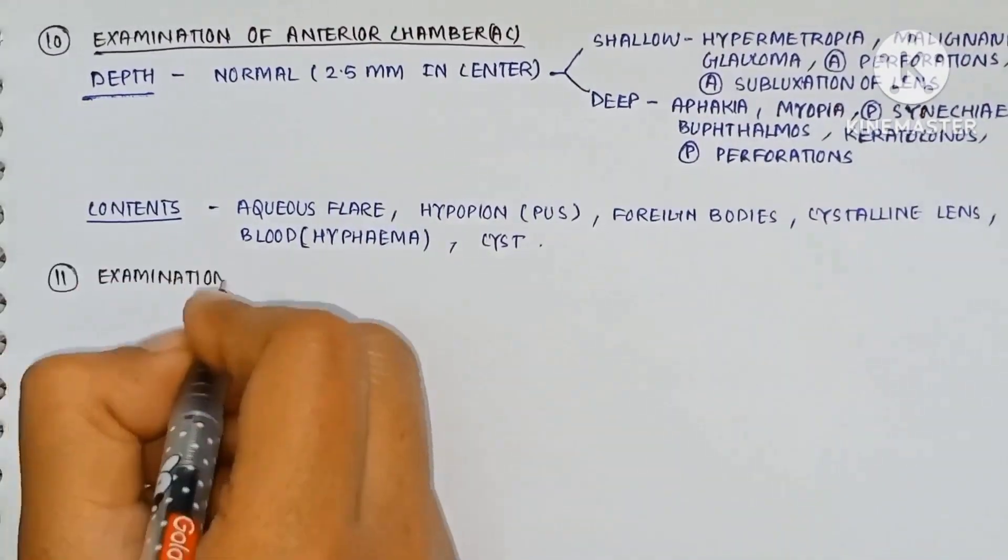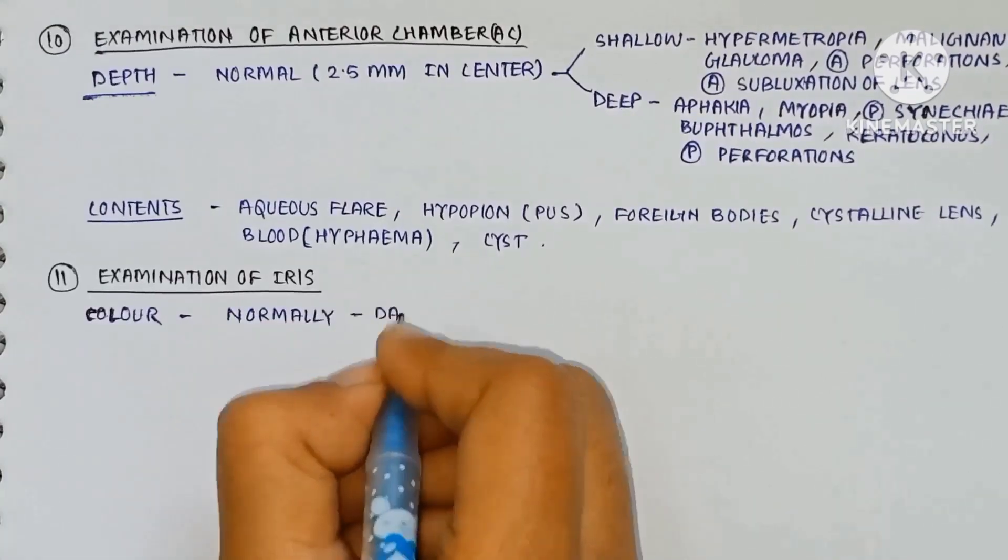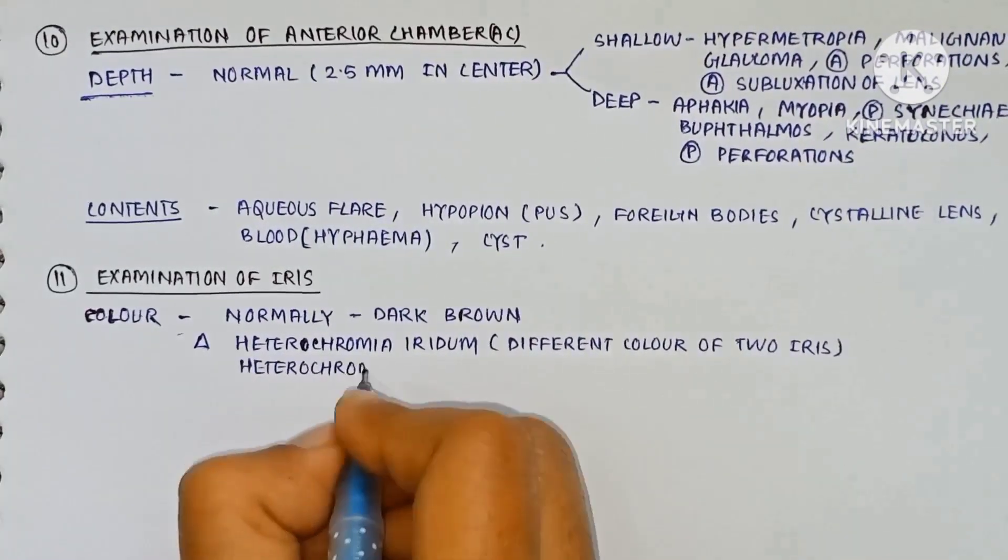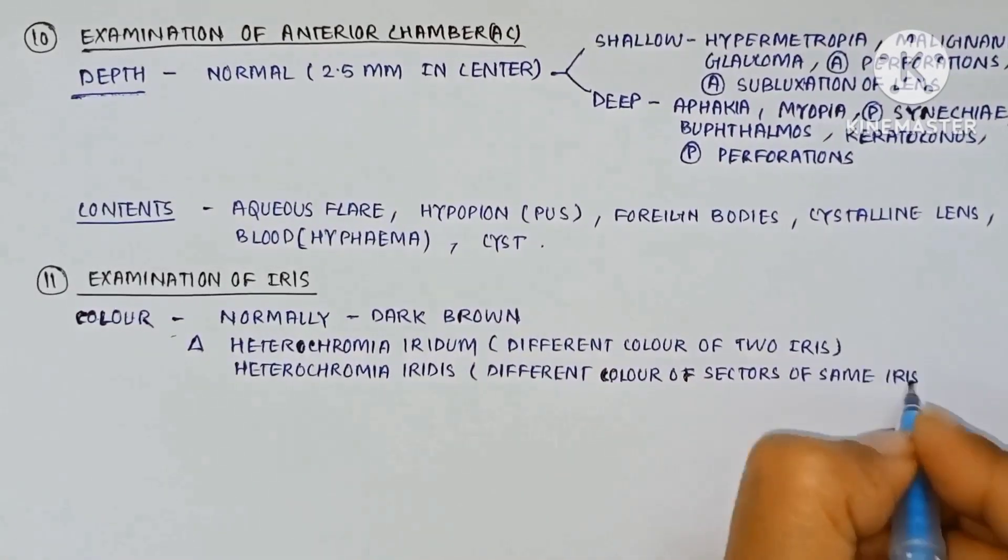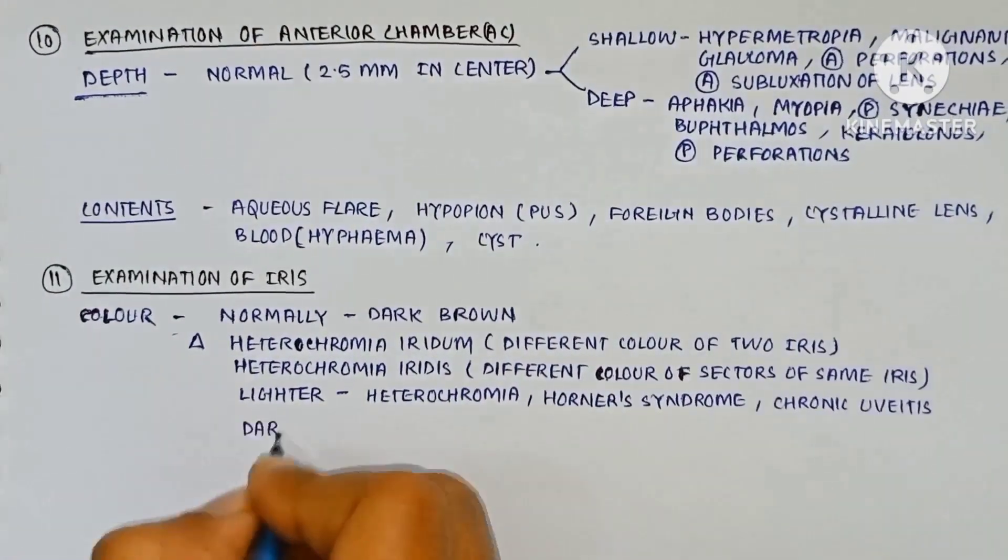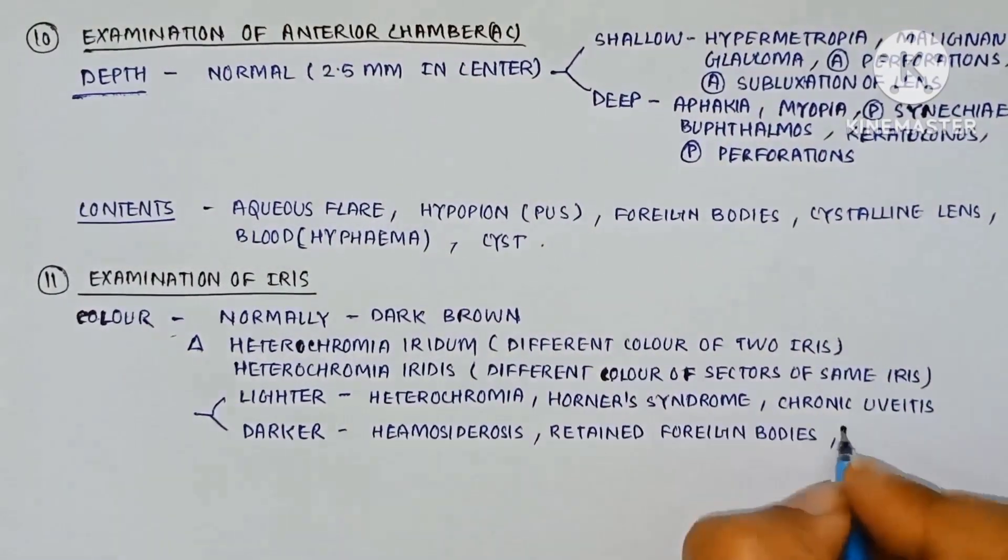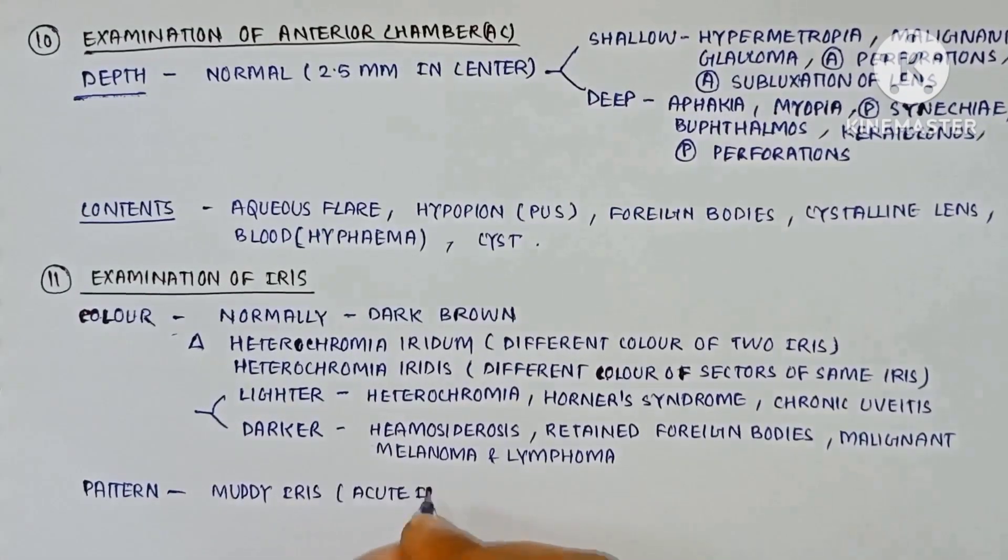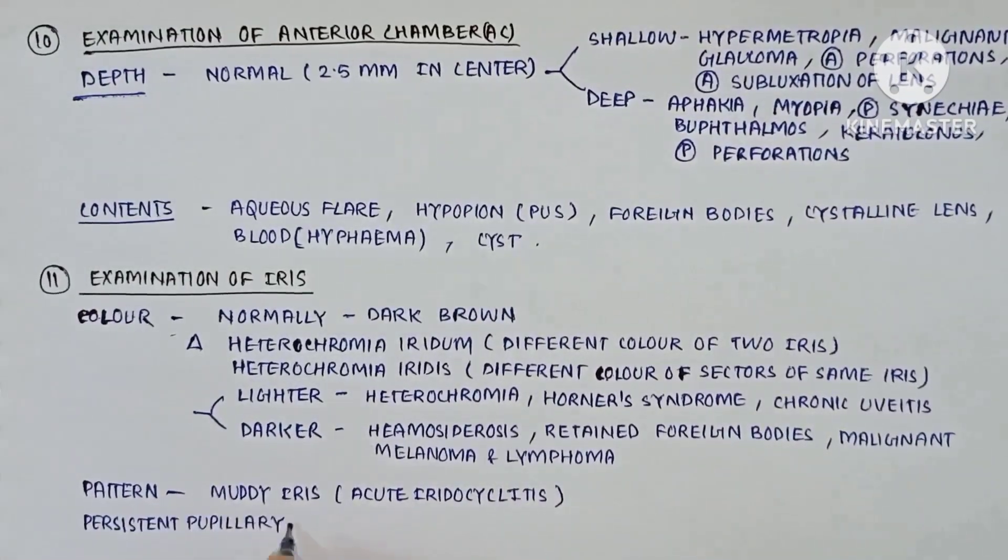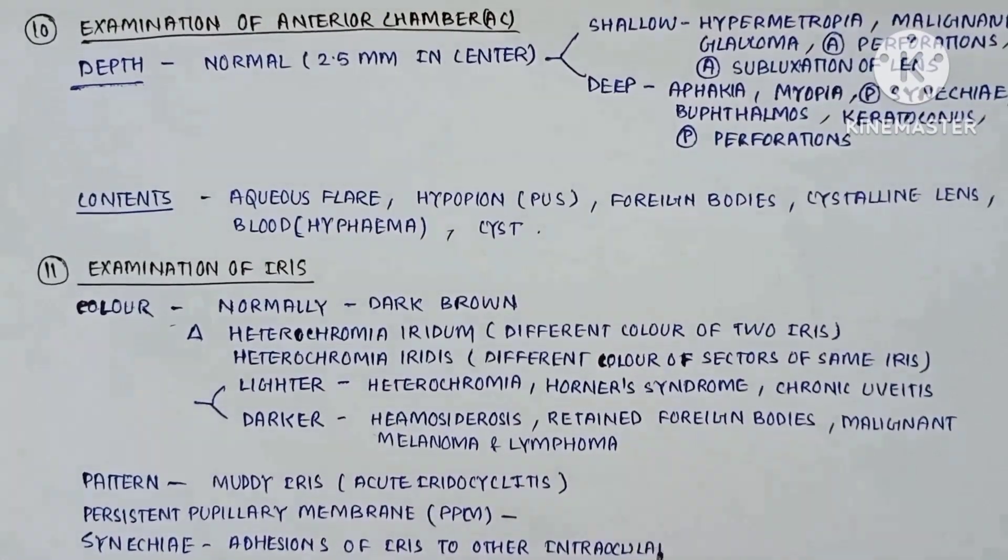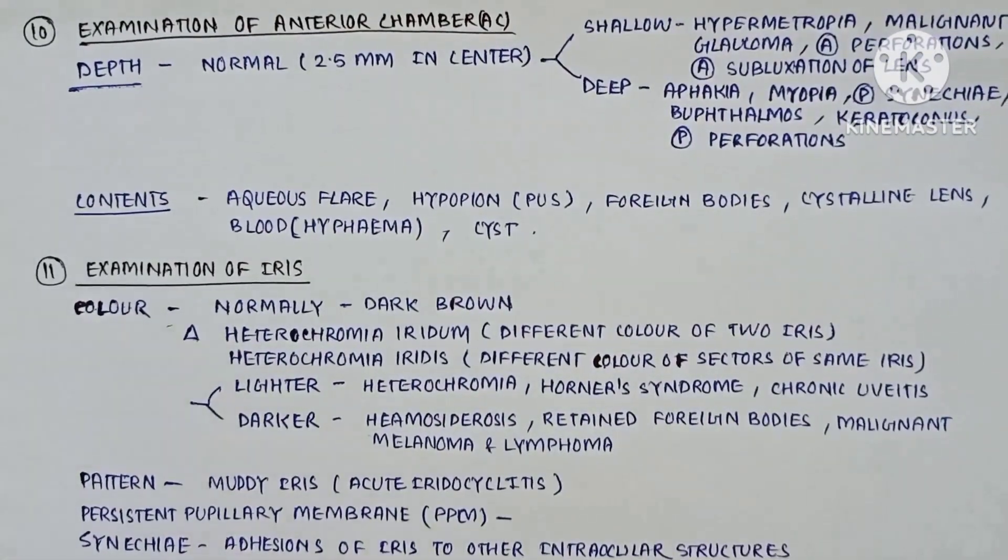The examination of the iris. Normal color is dark brown and changed in heterochromia iridium, the different color of the two iris. Heterochromia iridis is different color of sectors of the same iris. It is lighter in heterochromia, Horner syndrome, chronic uveitis. Darker in hemosiderosis, retained foreign body, melanin, melanoma and lymphomas. The pattern may be muddy iris in acute iridocyclitis, persistent pupillary membrane, synechia, adhesions of iris to other intraocular structures, nodules, gap or hole, cyst.